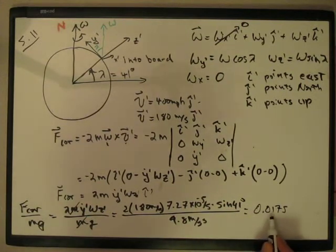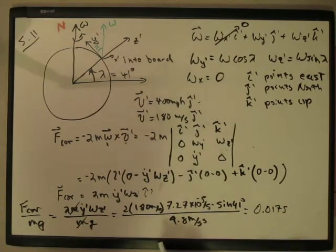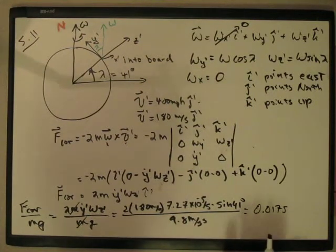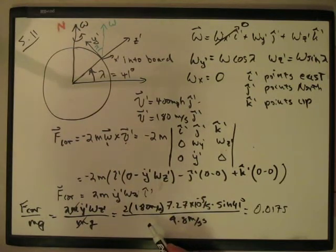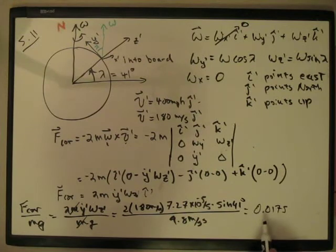And so that ratio, if you calculate it, is about 0.0175. And so the Coriolis force is about 2% of the weight of the car, which is not negligible. And it's significant just because the velocity is so large. You know, it would be a lot smaller if you're going 10 or 20 meters per second. So, that's it.